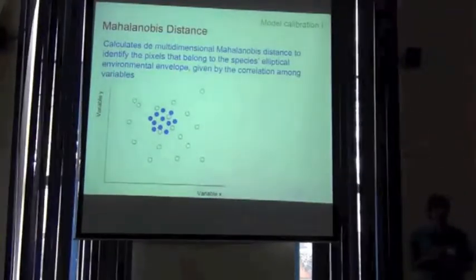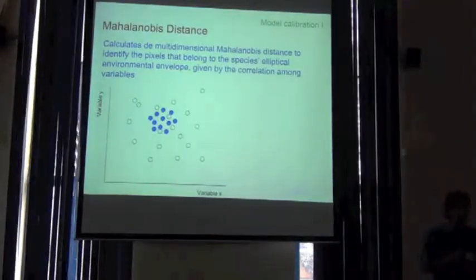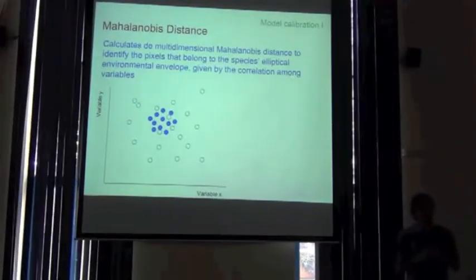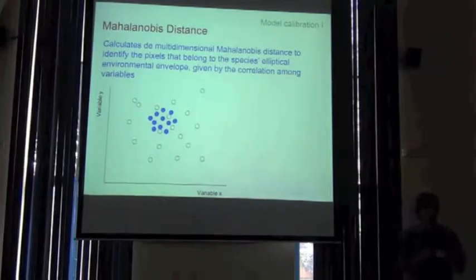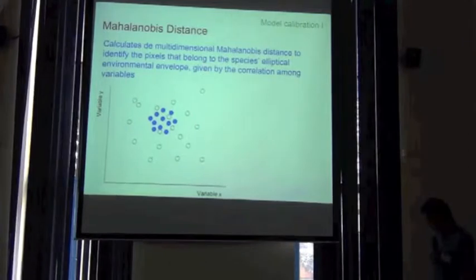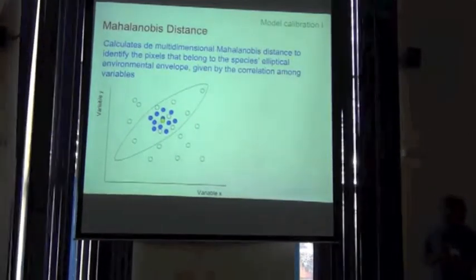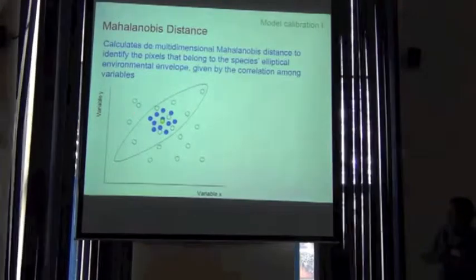There are several ways of measuring distances in environmental space or in multi-dimensional space. This is one of them. This is another one, Mahalanobis distance, which is particularly useful when you have collinearity among the variables,